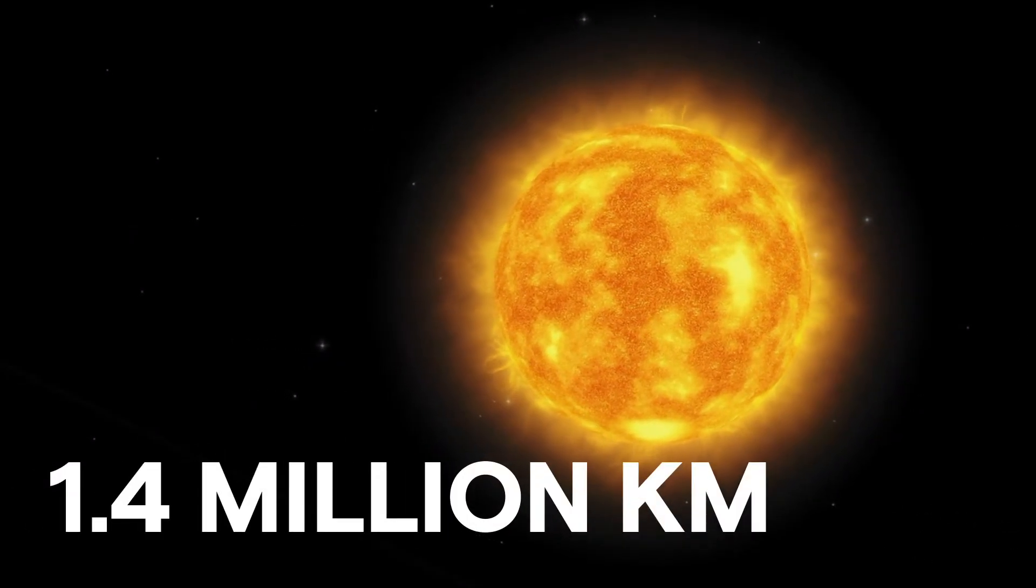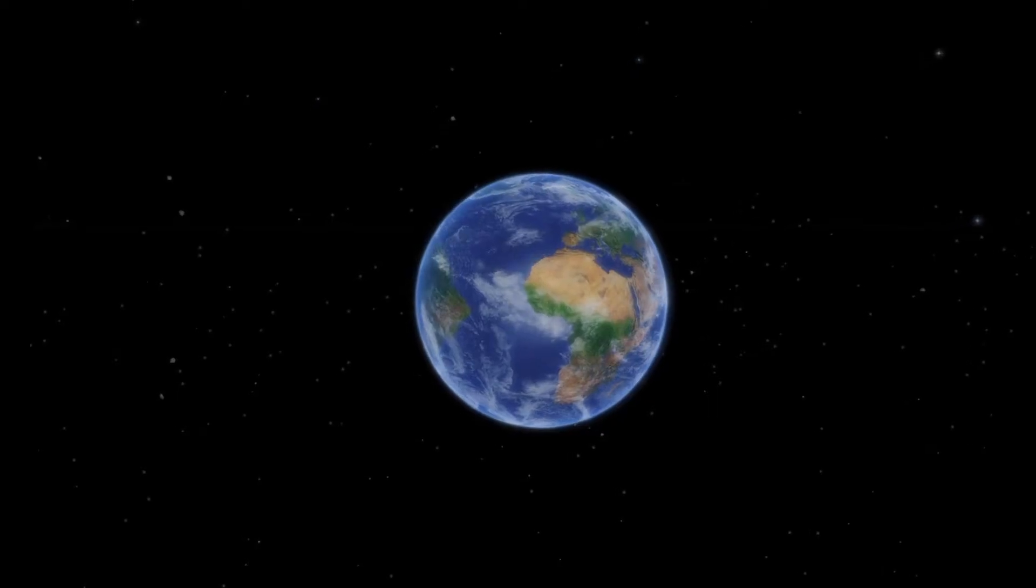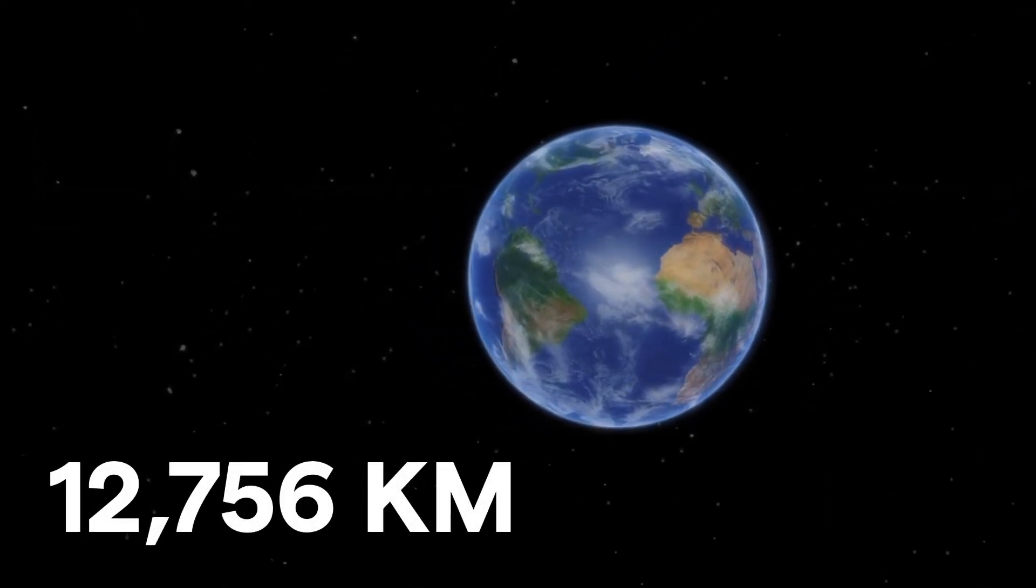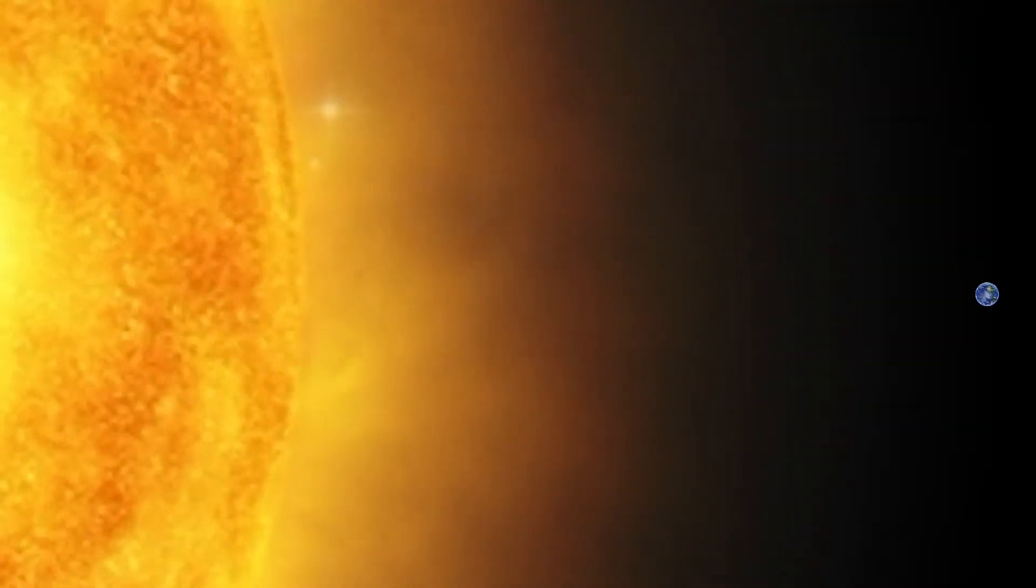...has a diameter of nearly 1.4 million kilometers. The Earth, our home in space, has a diameter of only 12,756 kilometers. That means the Sun has a diameter that is more than 100 times bigger than that of the Earth.